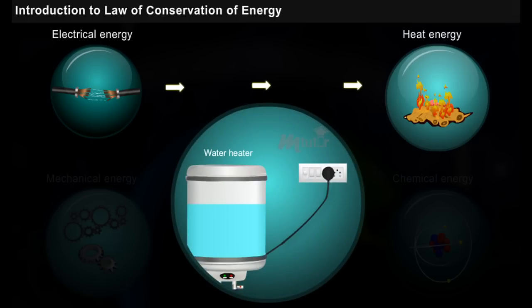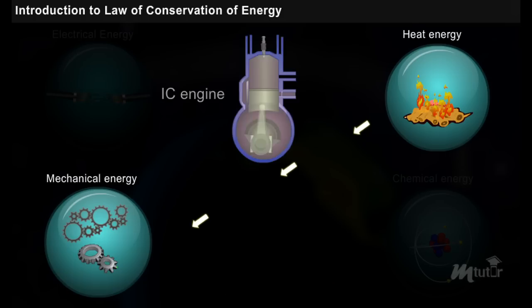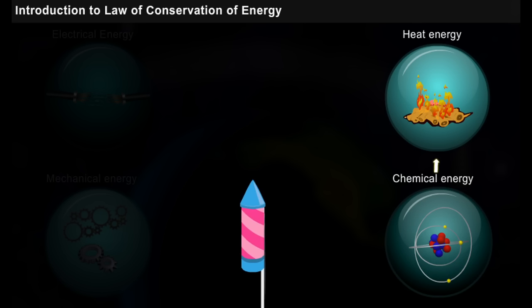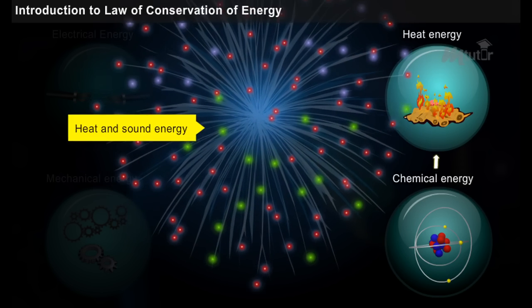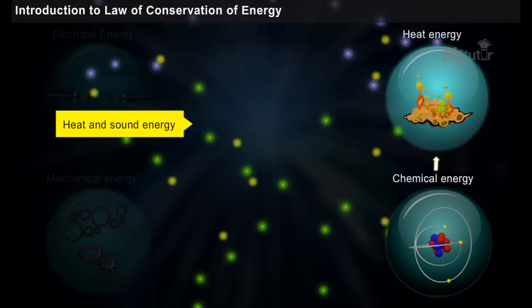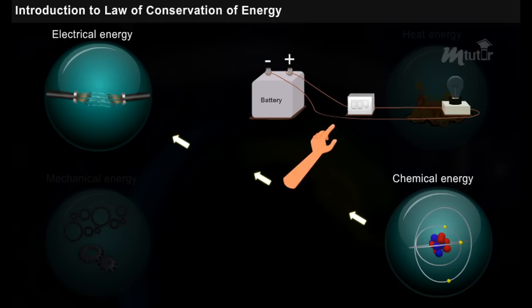The water heater is a good example for conversion of electrical energy into heat energy. In IC engine, there is a conversion of heat energy into mechanical energy. Conversion of chemical energy into heat and sound energy in crackers, and conversion of chemical energy to electrical energy in the battery.